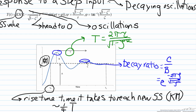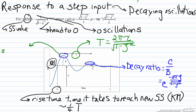Another value dictated solely by zeta is the overshoot. The overshoot represents how much the first peak overshoots the steady state value km. It is defined as b over a, where b is the distance between the peak and km, and a is the difference between where you start and km — which is typically km itself since we start in deviation variables at zero. The overshoot can be defined as the exponential of negative pi zeta divided by the square root of 1 minus zeta squared. The only difference from the decay ratio is the absence of the factor of 2 in the exponential.